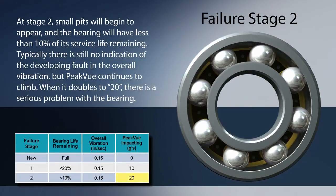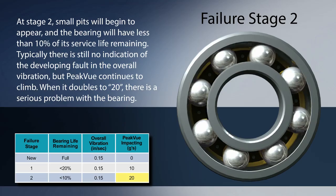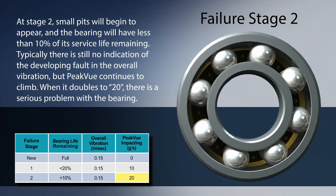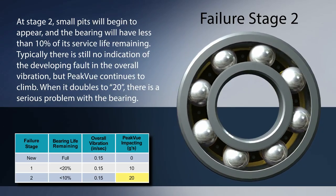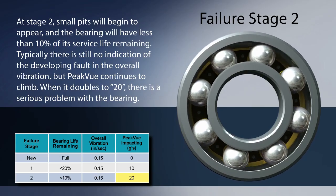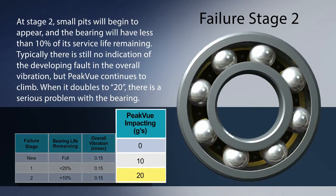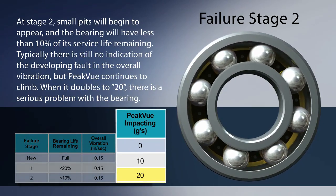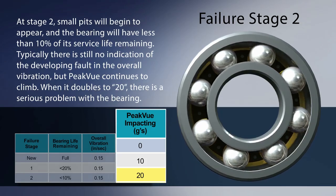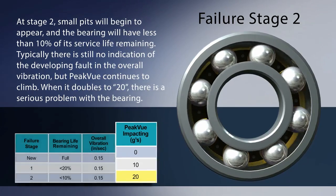At stage two, small pits will begin to appear, and the bearing will have less than 10% of its service life remaining. Typically there is no indication of the developing fault in the overall vibration, but peak view continues to climb. When it doubles to 20, there is a serious problem with the bearing.